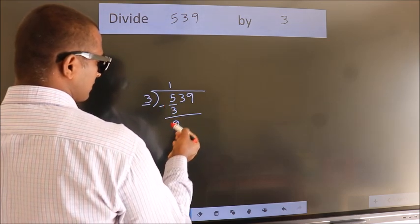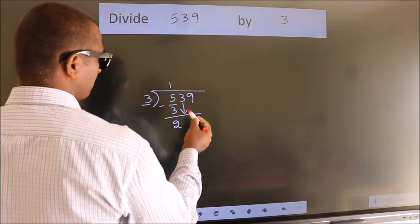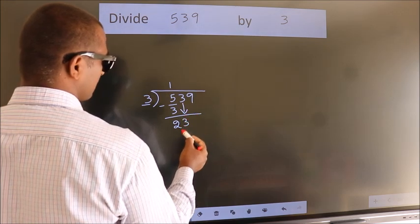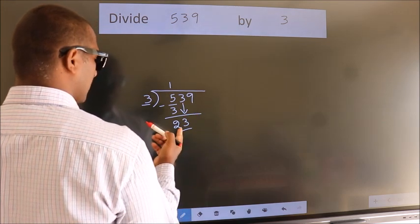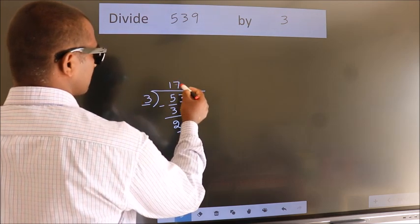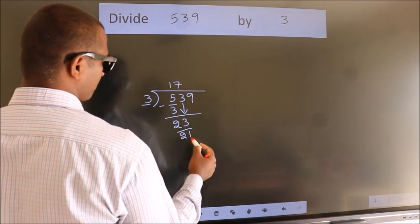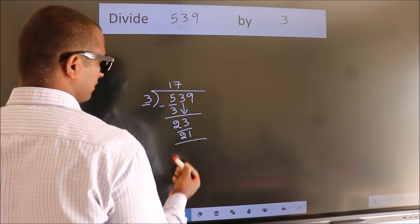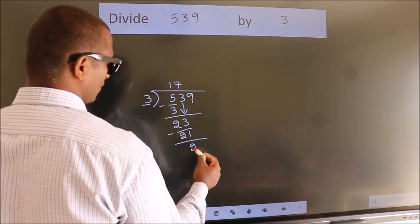After this, bring down the beside number. So, 3 down. So, 23. A number close to 23 in 3 table is 3 7s 21. Now, we subtract. We get 2.